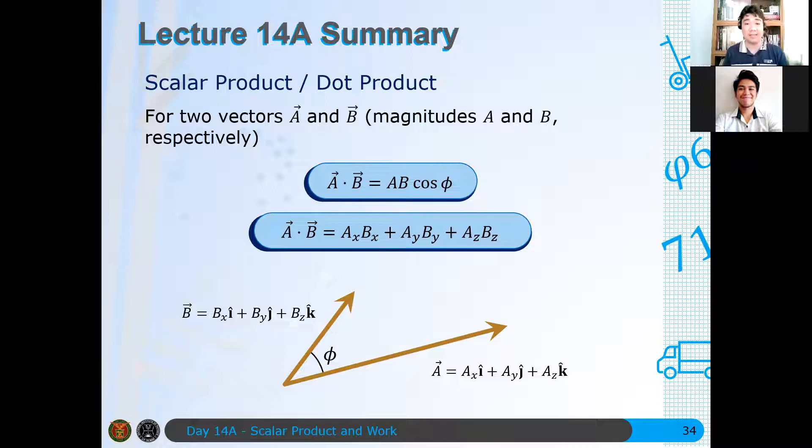Again, you have two definitions. A dot with B is just the magnitude of A times the magnitude of B times the cosine of the angle between them. And then A dot with B is simply, in the second definition, if we use unit vectors, it's just pagsamasamahin ng pare-pareho, Ax Bx plus Ay By plus Az Bz. So that's the two definitions of the scalar product.